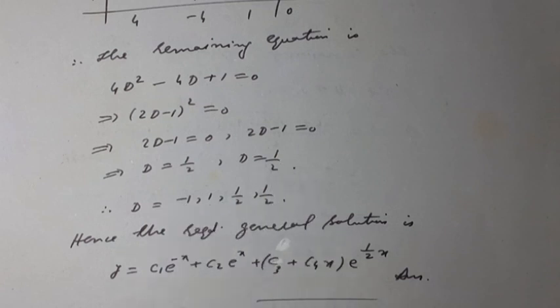Therefore d equals minus one, one, one over two, one over two. Real and distinct roots, real and repeated roots. In this case, the required general solution is y = c₁e^(-x) + c₂e^x + (c₃ + c₄x)e^(x/2). Answer.